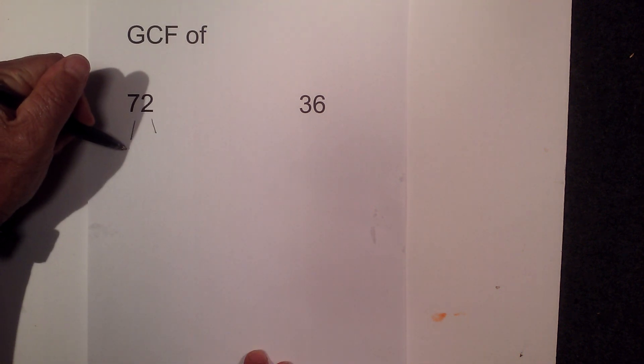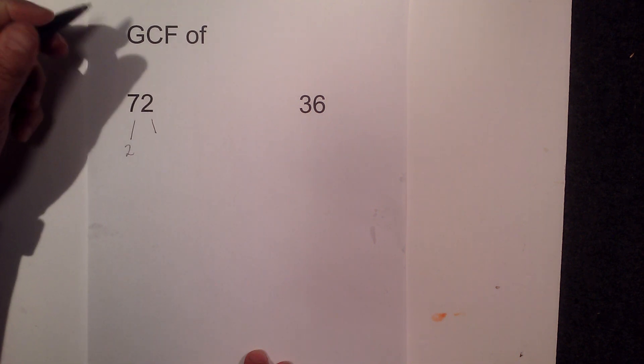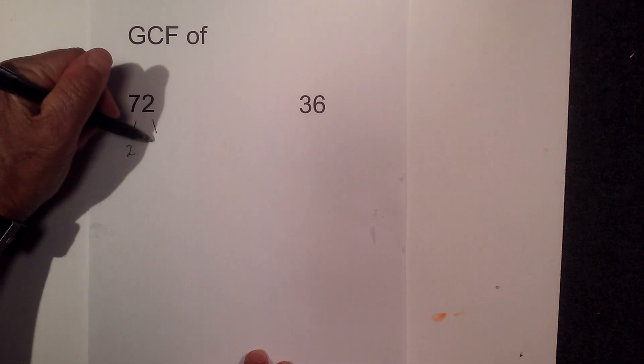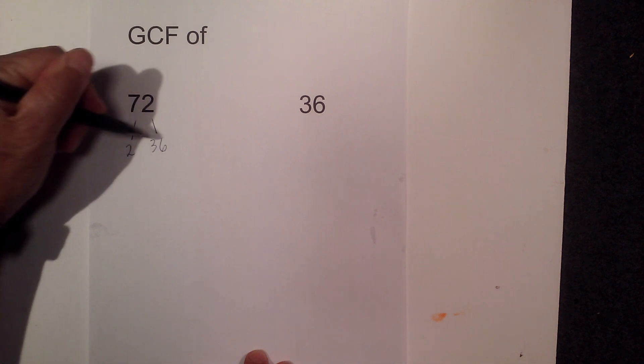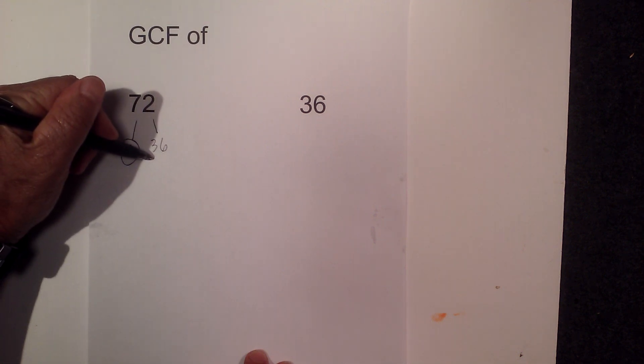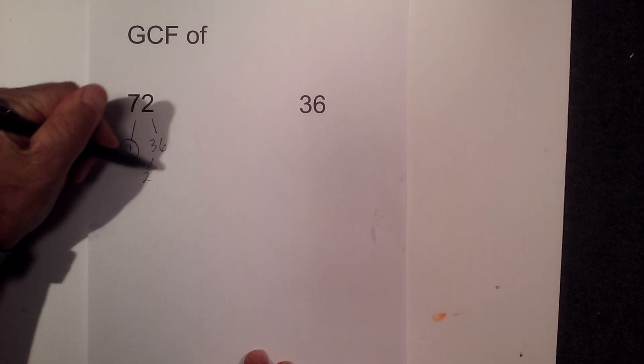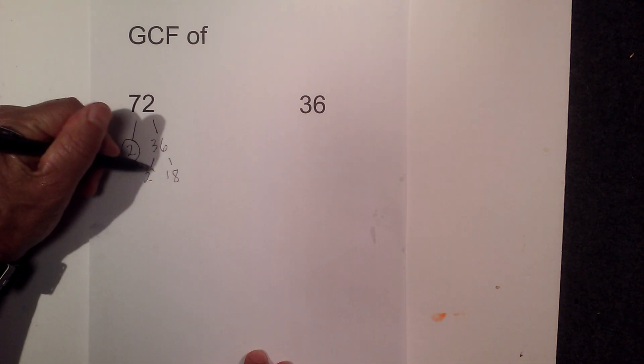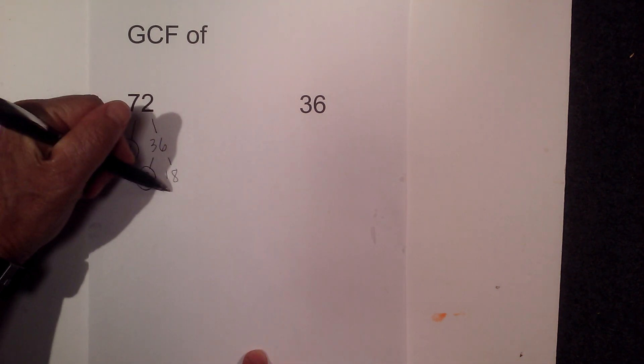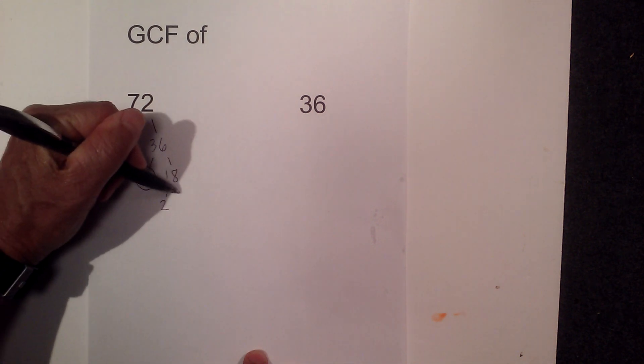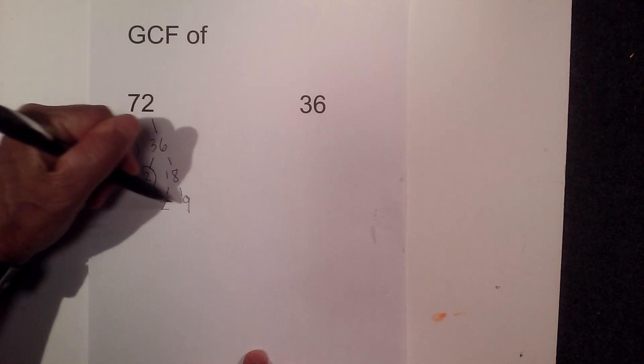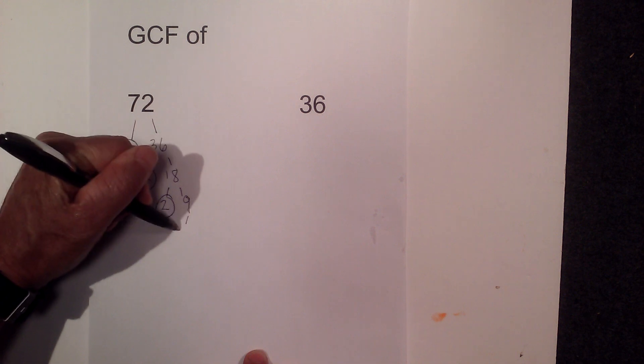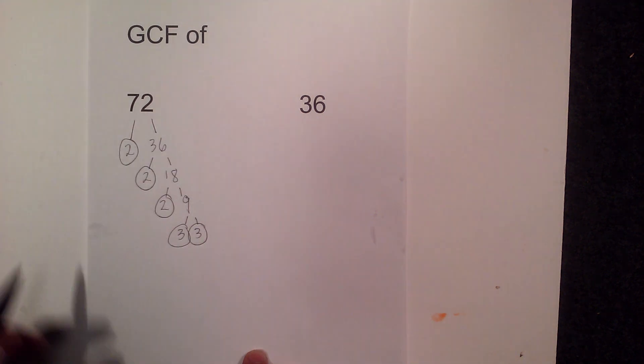So 2 will go into 72, what is that, 36 times. Circle the 2 because it is prime. Now 2 goes into 36, 18 times. Circle the 2 because it is prime. 2 goes into 18, 9 times, and then 3 times 3 is 9. So now I have all the prime numbers of 72.